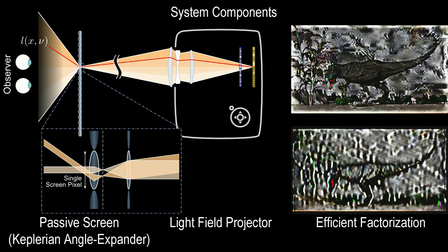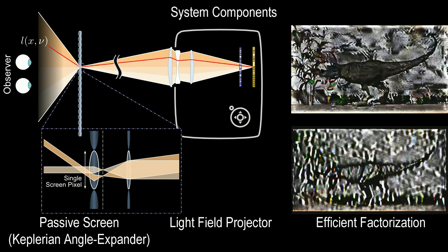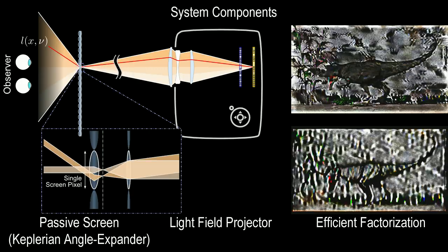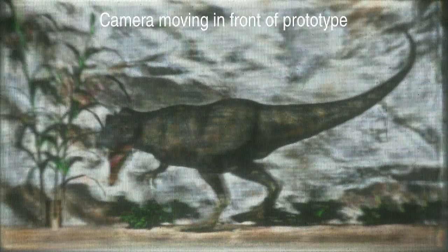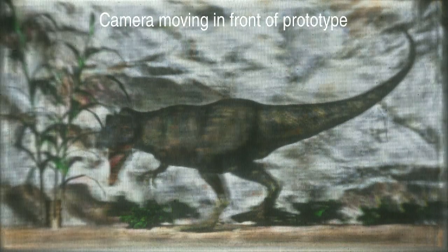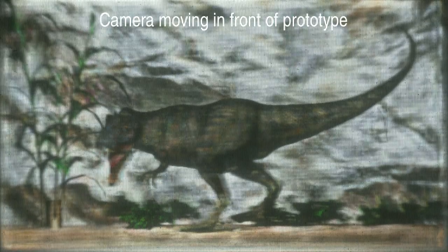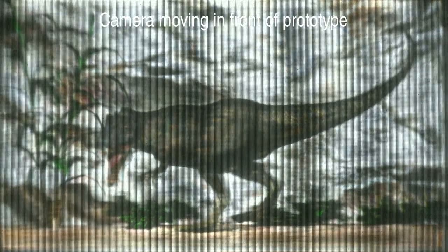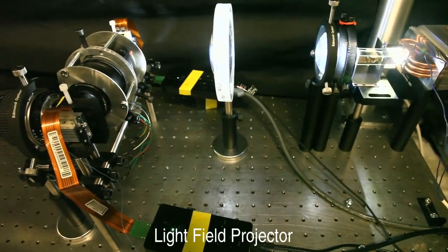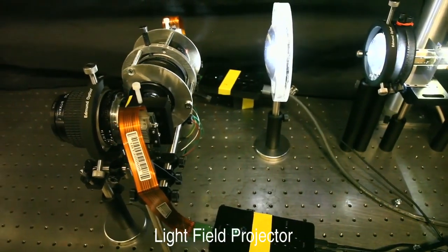Light field factorization is used to decompose a target light field into a set of time-multiplexed patterns that are shown at high speed on the spatial light modulators. Here is a result captured from our prototype. Although the resolution is relatively low, parallax is visible within the field of view allowed by our light field projector, constructed from commodity parts.